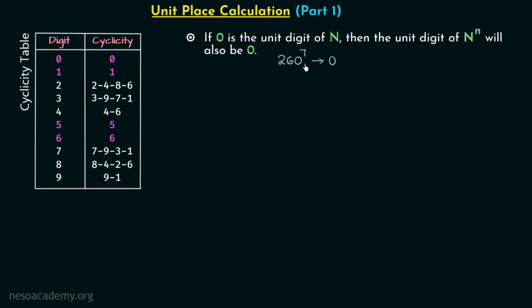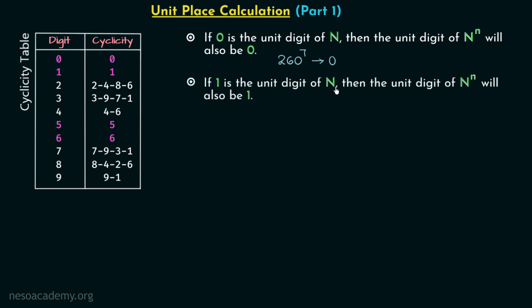Now let us move on to the next digit, which is one. If one is the unit digit of number N, then the unit digit of N raised to power n will also be one. Let us take one example: 91 raised to power 9. The unit digit of number N, which is 91, is equal to one, and therefore 91 raised to power 9 will also have the unit digit equal to one.